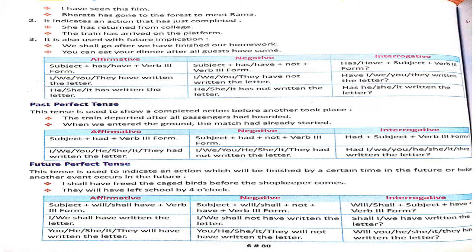Now for present perfect tense: has or have + Verb third form. For negative: has/have + not + Verb third form. For interrogative, 'has' or 'have' comes to the front. For past perfect: 'had' is used instead of has/have — both for singular and plural. 'Had not' for negative, and 'had' comes first in interrogative. For future perfect: Subject + will have / shall have + Verb third form. Negative: 'will not have' or 'shall not have'. Interrogative: will/shall + Subject + have + Verb third form + Object.